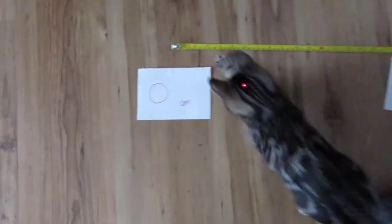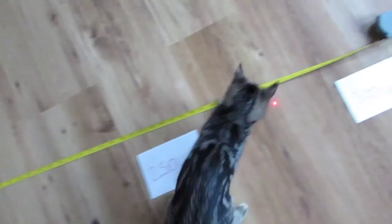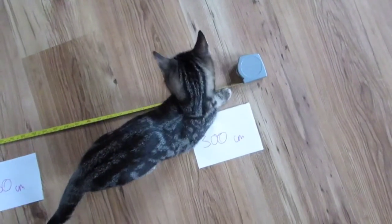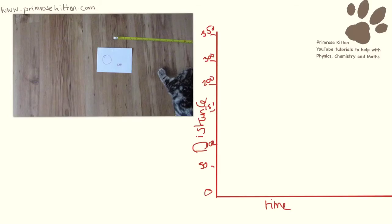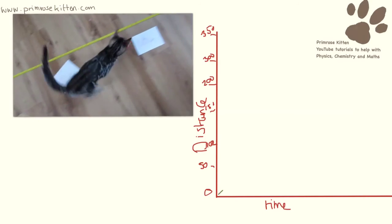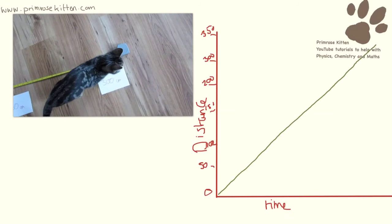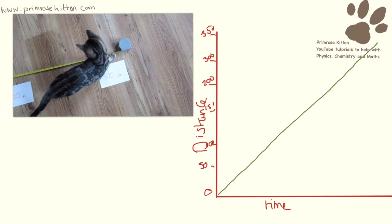So here is our next one. Here is the next graph we are going to be drawing and here we just have Prim moving in a steady line the entire time. No change in speed.